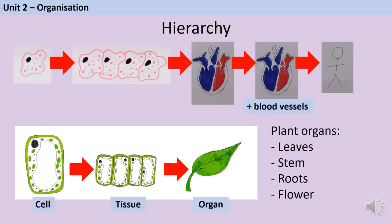The second topic in GCSE Biology Paper 1 is organisation. Cells are the basic building blocks of all living organisms. A tissue is a group of cells with a similar structure and function. Where multiple different tissues perform a specific function together, that's an organ — like the heart, lungs or pancreas. Organs may be organised into organ systems like the digestive system and circulatory system, which work together to form organisms.